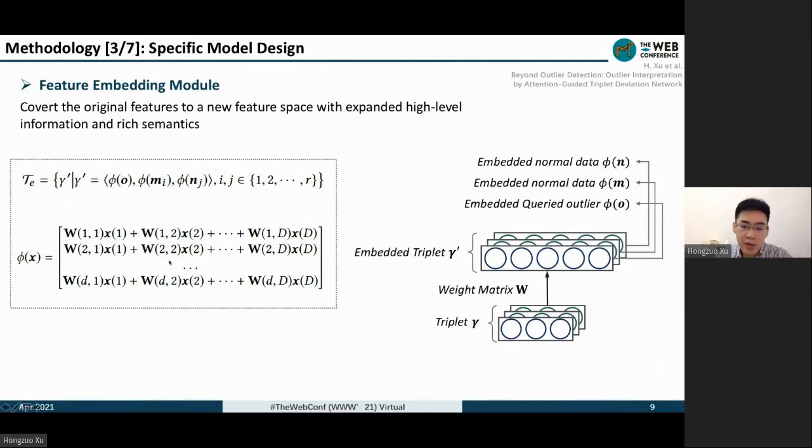We need to transform attention coefficients of the embedding dimensions back to the original features by following some rules. Therefore, we can only use an explainable linear layer here. The weight matrix is W, and the data objects in triplets are converted to Phi_N, Phi_M, and Phi_O by matrix W.